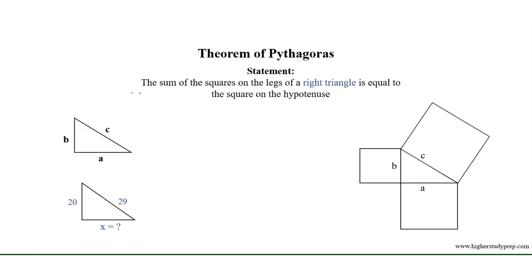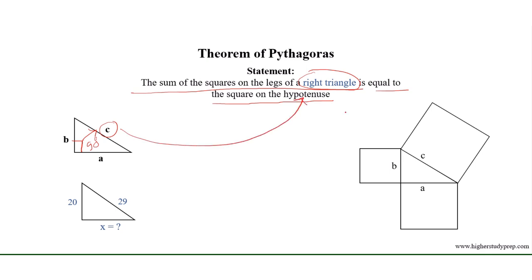The theorem of Pythagoras states that the sum of squares on the legs of a right triangle is equal to the square on the hypotenuse. For example, in this triangle, the angle is 90 degrees, so the opposite side C is the hypotenuse with area C squared. The squares on the legs have areas B squared and A squared respectively. So we can write B squared plus A squared equals C squared.